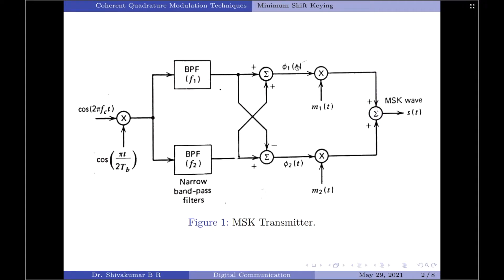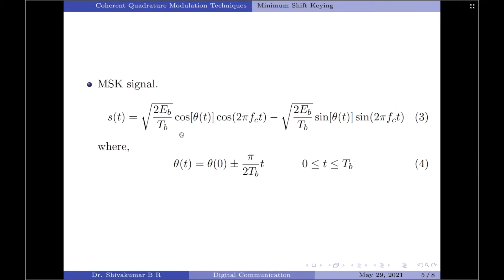Finally, the orthonormal basis functions phi1(t) and phi2(t) are multiplied with two binary waves m1(t) and m2(t), both of which have a bit rate equal to 1 by 2tb — this is the condition for minimum shift keying. These two binary waves are extracted from the incoming binary sequence b(t), which I will explain in the next slide. The multiplier outputs are then added to create the MSK wave, given by S(t) = sqrt(2Eb/Tb)·cos(θ(t))·cos(2π·fc·t) − sqrt(2Eb/Tb)·sin(θ(t))·sin(2π·fc·t), where θ(t) = θ(0) ± (π / 2tb)·t over the interval 0 to tb.